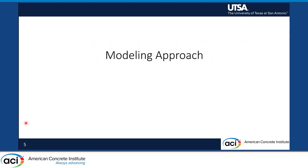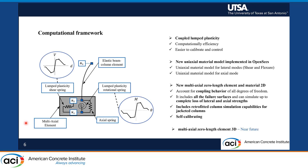I'm going to talk about the modeling framework we have selected. Because we wanted computational efficiency, we went for a lumped plasticity framework. This method is also easier to calibrate and control, especially in the post-capping range where the failure starts. We proposed new uniaxial material models in OpenSees — two for lateral modes, including shear and flexure, and one for axial mode, whose behavior is quite different from the lateral modes. All these uniaxial material models are housed in a new multi-axial element where they can talk to each other seamlessly, achieving the coupling behavior.